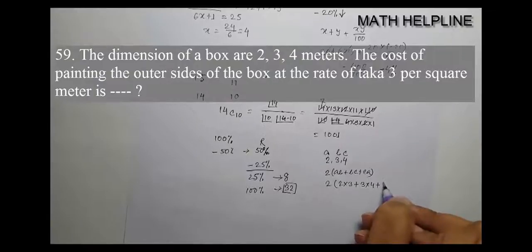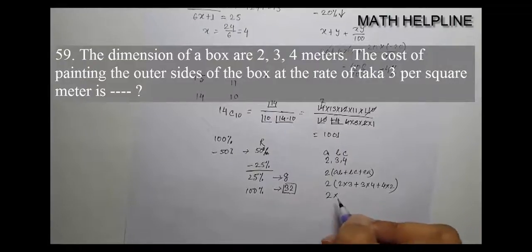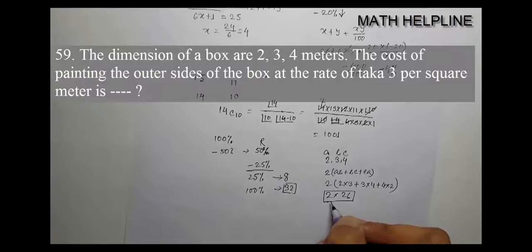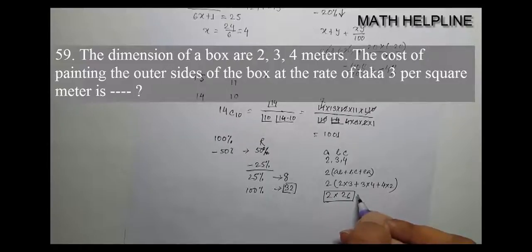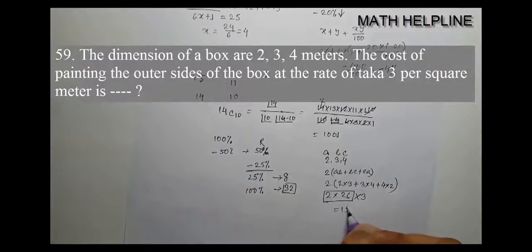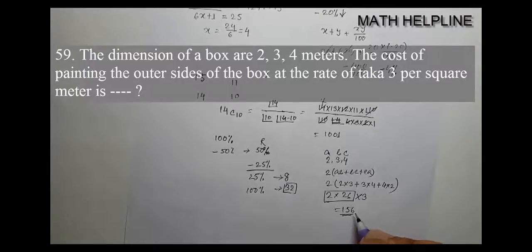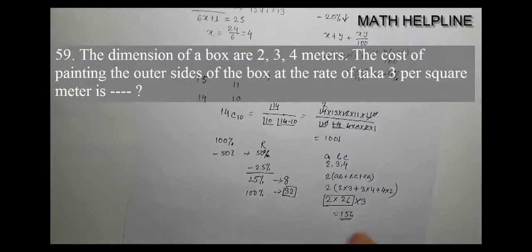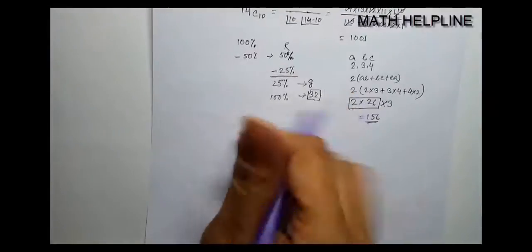This gives us 2 into (6 plus 12 plus 8), which equals 2 into 26, equals 52. The answer is 52 square meters.